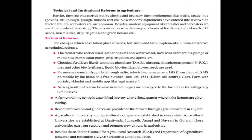Earlier, farming was carried out by simple and ordinary farm implements like sickle, spade, boke, grill, plough, and bullock cart. Now modern implements have entered such as tractors, trailers, rotavators, etc. Besides, modern equipment like threshers and harvesters are used in wheat harvesting. There is an increase in usage of chemical fertilizers, hybrid seeds, Bt seeds and insecticides, drip irrigation, and greenhouses. The changes which have taken place in seeds, fertilizers, and farm implements in India are known as technical reforms.